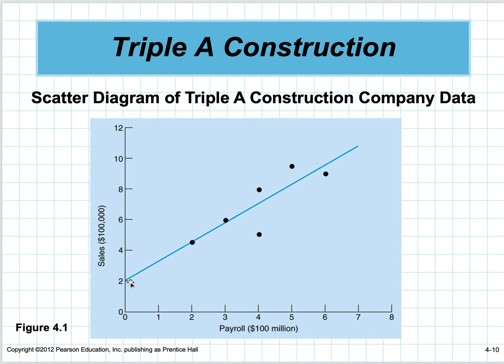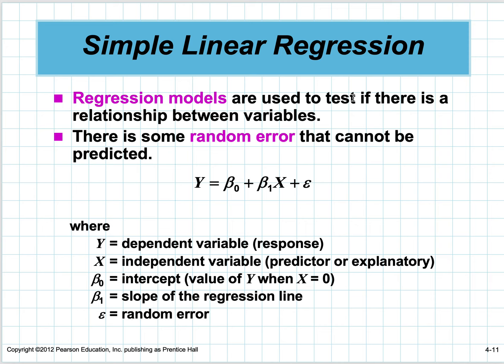Regression models are used to test if there's a relationship between variables. There's always some random error—not everything lies on the line no matter how we draw it; there are always going to be points that are off it.